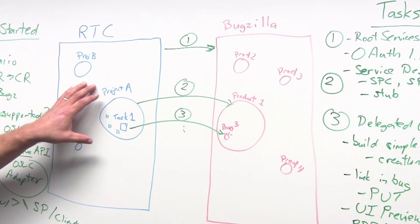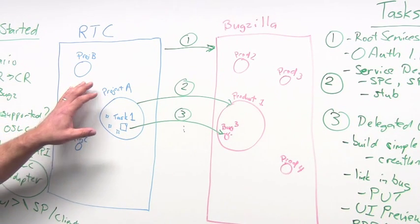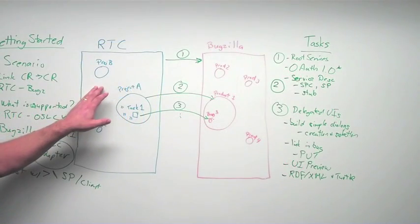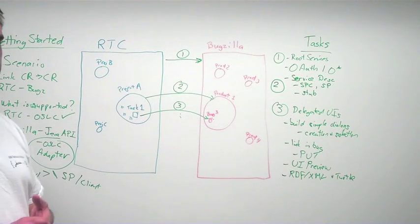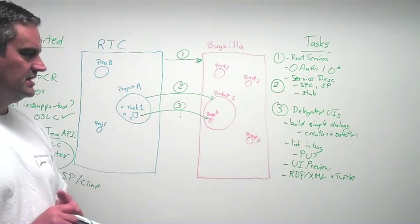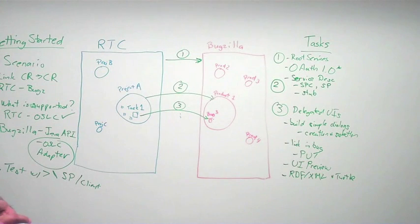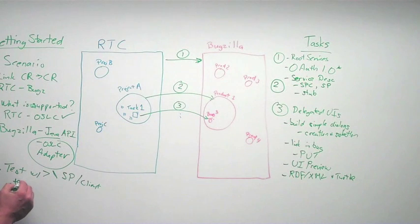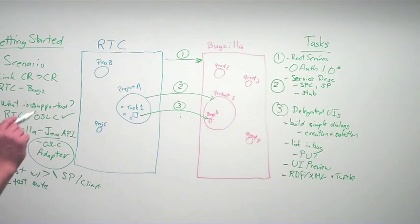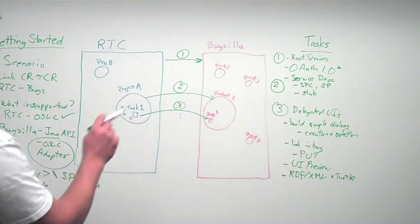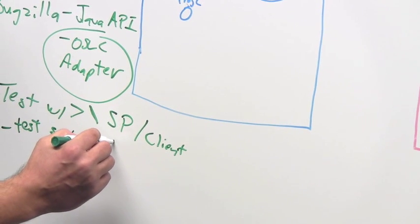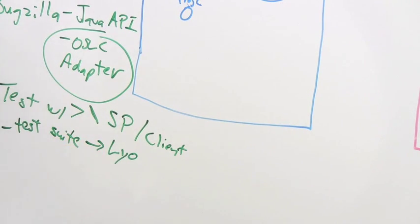You can look at some of the reference implementation work that's going on in some of the open source in the Eclipse LEO project. LEO being L-Y-O. And also there's some test suites in there that you can point, if you're feeling brave, point the test suite towards your implementation and use that as well. That's the Eclipse LEO project.